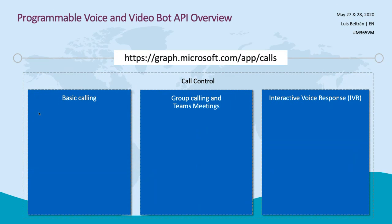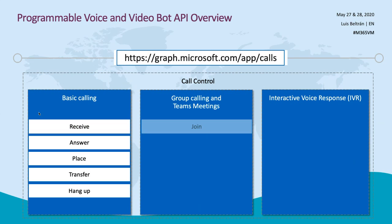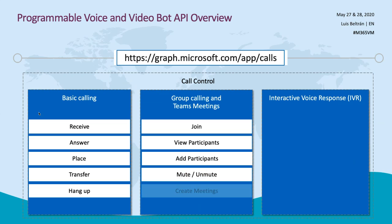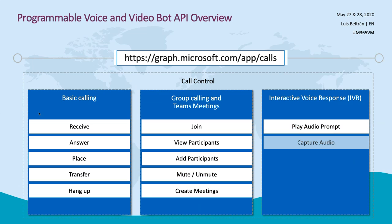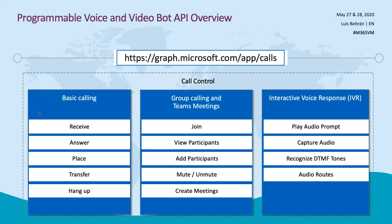With the call control Graph API, you can have a bot receiving a call, answering, transferring to another user, or hanging up. You can add participants to an ongoing meeting, mute someone via the application, and capture the audio. It is quite a powerful API.